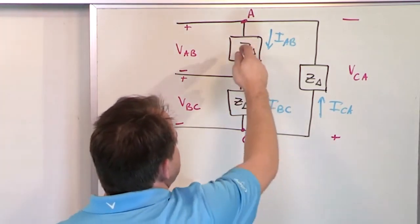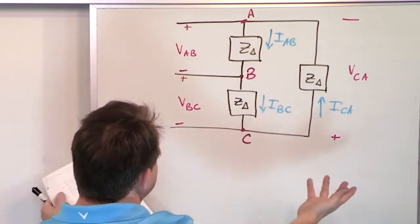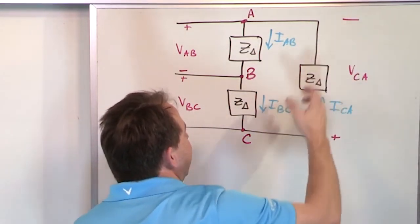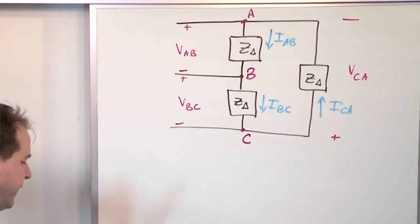So basically I have each of the different loads. I have everything drawn here, VBC and IBC, and here goes from C back to A, and then ICA. So it's just basically drawing a reference here.